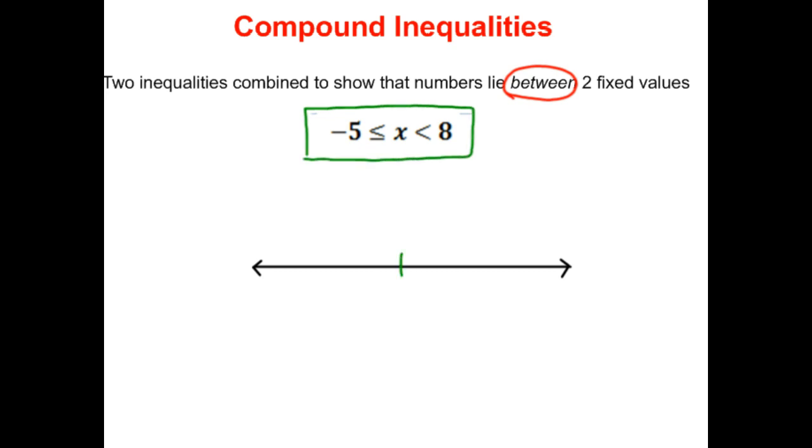So what that means is, if we look at a number line, here's negative 5, and 8's over here. This compound inequality is telling us that x represents all the numbers that are strictly less than 8, but greater than or equal to negative 5.